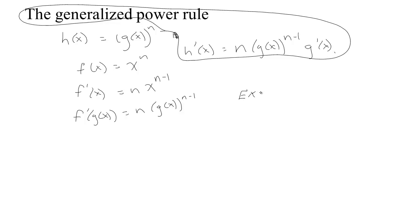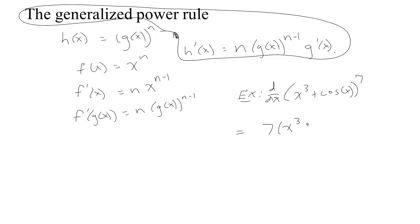Let's do one more example. Let's say we've got x cubed plus the cosine of x, all raised to the seventh power, and we want to find the derivative with respect to x. Since the outside function is a power, the power comes down, we have our inside function raised to one power less — 1 less than 7 is 6 — and then we multiply by the derivative of what's inside. The derivative of x cubed is 3x squared, and the derivative of cosine is minus sine, so we get 3x squared minus sine x. There's our derivative.